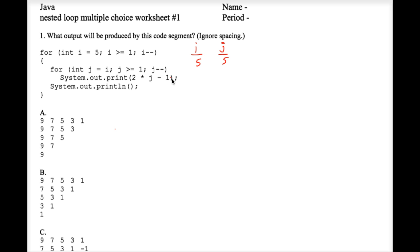In our output window we are printing two times j minus one. Two times j is 10, minus one is 9, so 9 prints. We cycle back up to the top of the inner for loop — j minus minus — j is still greater than or equal to one.